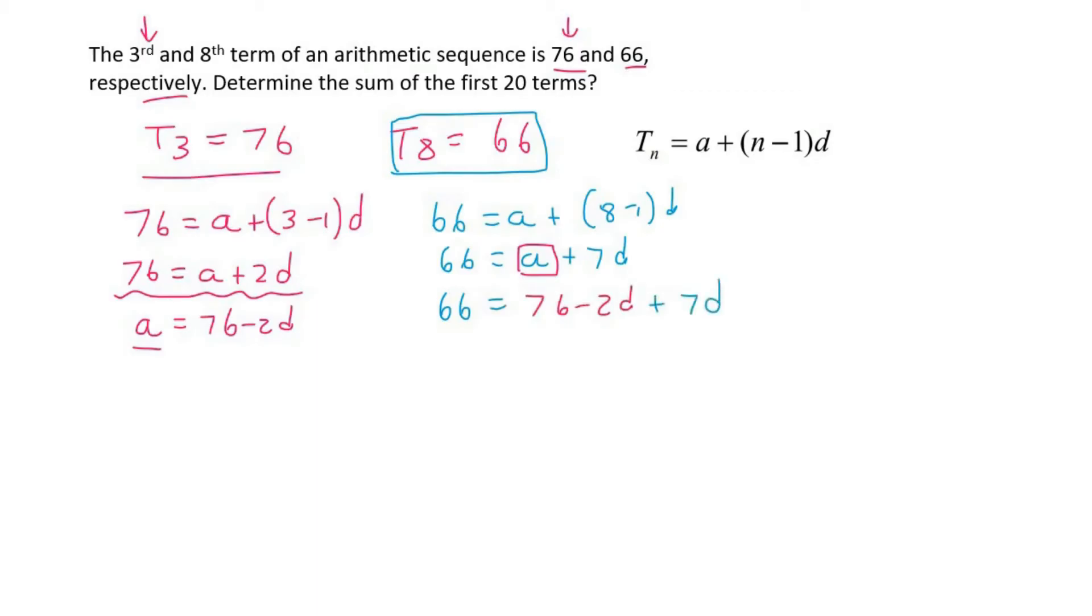Then I can solve for D, which gives us minus 10 equals 5D. So D is negative 2. Now I can plug that D value here. So A would be 76 minus 2 in brackets minus 2, and A would be 80.